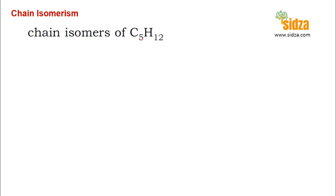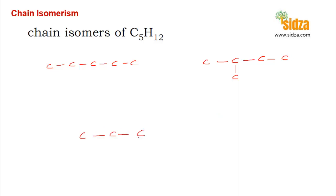Now we can draw the chain isomers of C5H12, the 5-carbon alkane, which is pentane. You can have different arrangements for this C5 molecule. Either all five carbon atoms are arranged linearly — that is normal pentane — or you can have four carbon atoms in the main chain with one more carbon atom attached to the second carbon, or you can have three carbon atoms with one carbon here and one carbon here. So these are the three chain isomers of C5H12.